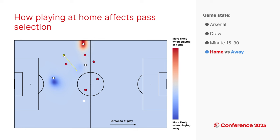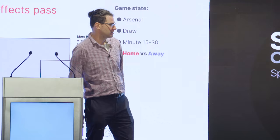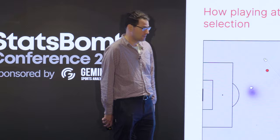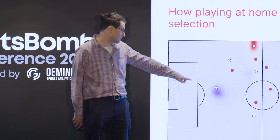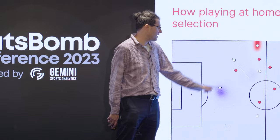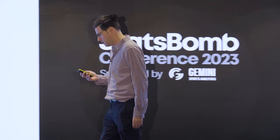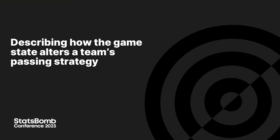The second thing is to look at home versus away. Here's an example for Arsenal — holding all game state factors constant, Arsenal possesses the ball, the score is tied, the minute is between 15 and 30, and we contrast expected behavior between playing at home and playing away. Red means more likely to pass when playing at home; blue means more likely when playing away. When they're away, they're more likely to play conservatively and pass back to the goalkeeper. When they're at home, they're more likely to play a more aggressive forward pass to the wing — capturing differences in aggressiveness of home versus away behavior.